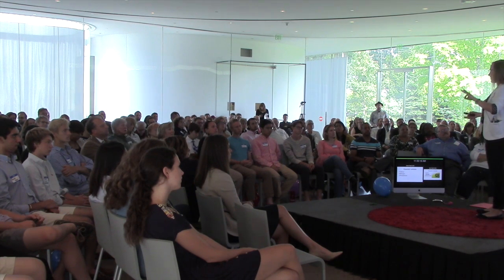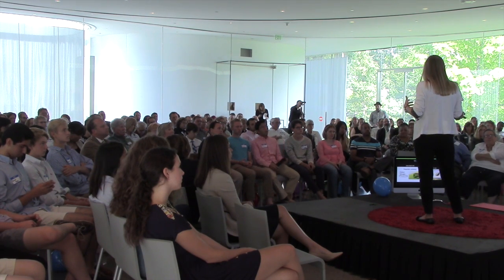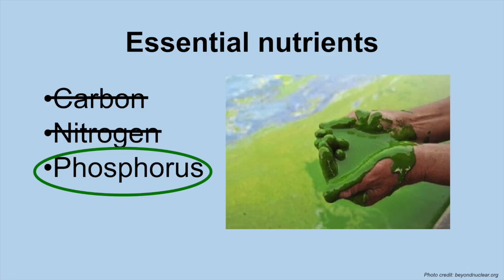There are three main nutrients we're going to talk about. First is carbon, the backbone of life — we all have it, we all need it. Then there's nitrogen, also found in our ecosystem, and we need it. But the third one, phosphorus, gets thrown around a lot because it's a problem. This is what happens when we have too much phosphorus — you see that green, thick algae? Someone is holding it in their hands. Our beaches and all of Lake Erie are filled with it.